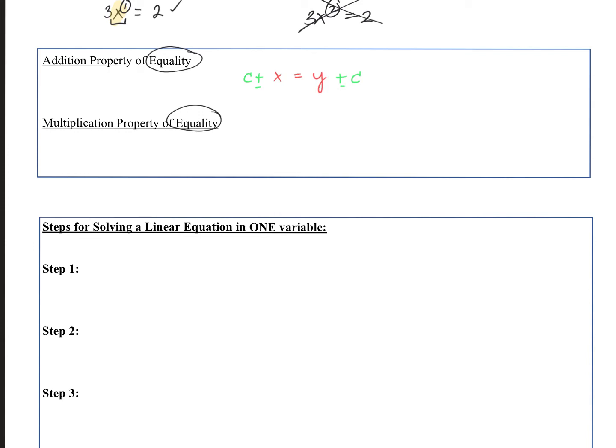The multiplication property of equality: if we have some sort of equation, we can multiply both sides by the same value and nothing changes — but we have to multiply both sides by the same value. It also works for dividing both sides by the same value.